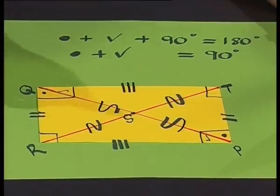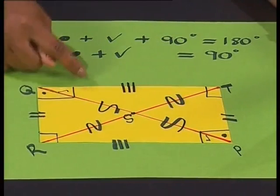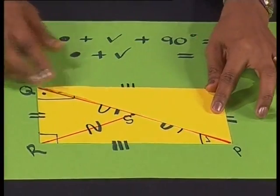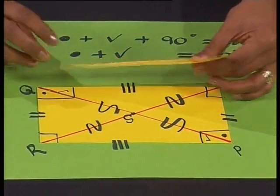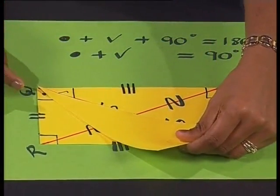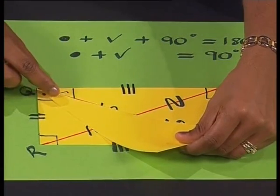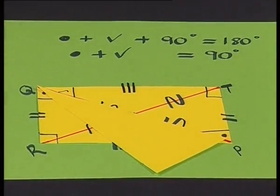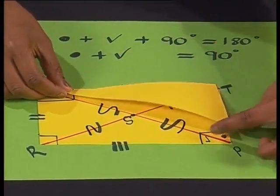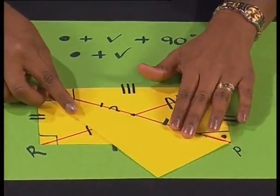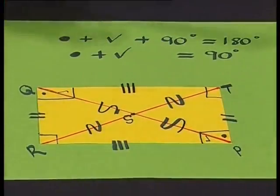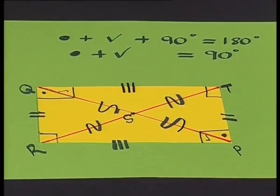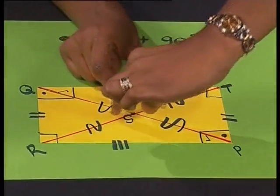Now I want to know if the diagonal PQ bisects the angle at Q. If I place the triangle and flip it, we see that no — the angle with the dot is bigger than the angle with the tick. Let's check the angles at P as well: the dot is still bigger than the tick. So we can say that in this rectangle, the diagonals do not bisect the angles. Do the diagonals bisect each other at 90 degrees? No — these two angles are much smaller than these two angles, so the diagonals do not intersect at right angles.